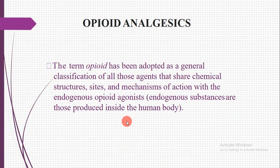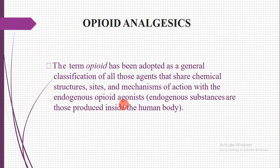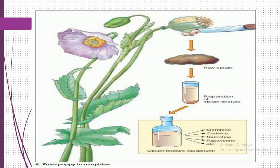Now, coming to opiate analgesics: the term 'opiate' has been adopted as a general classification of all agents that share chemical structure, sites, and mechanism of action with the endogenous opiate agonists. Endogenous substances are those produced inside the human body. Opiate drugs may be agonists, which enhance biological activity, or antagonists, which block or inhibit it.